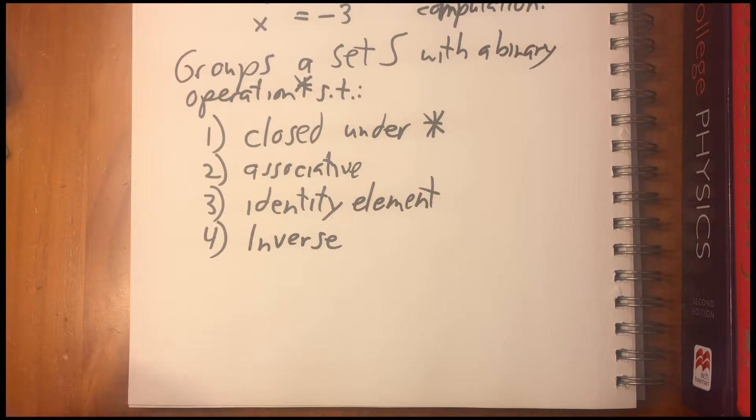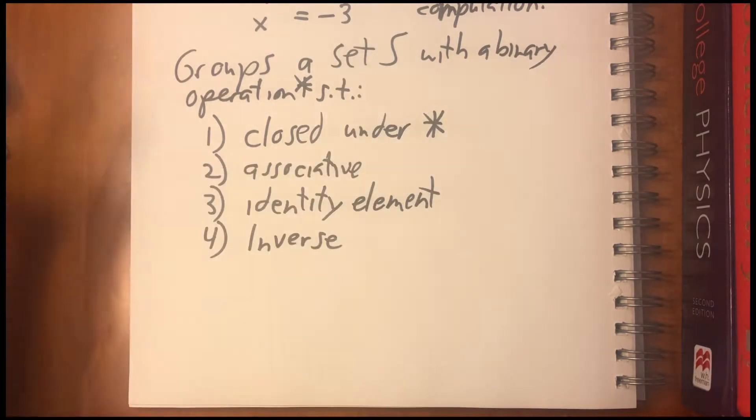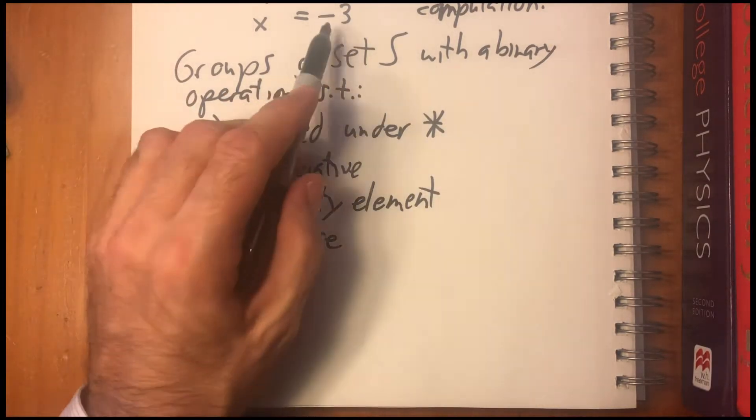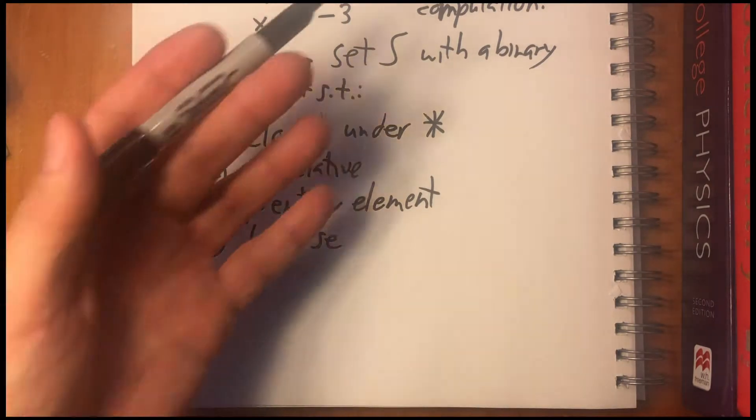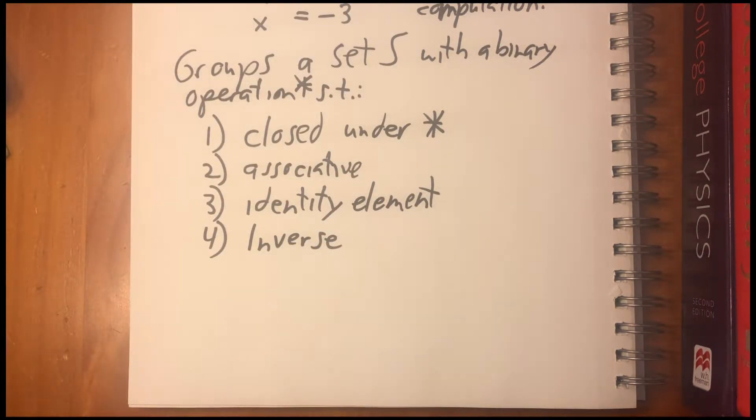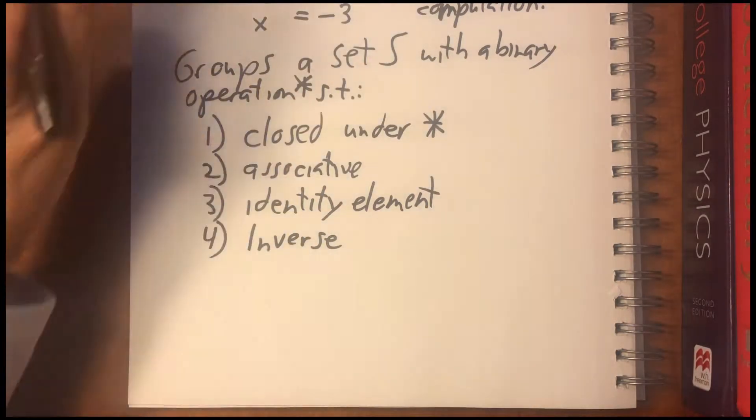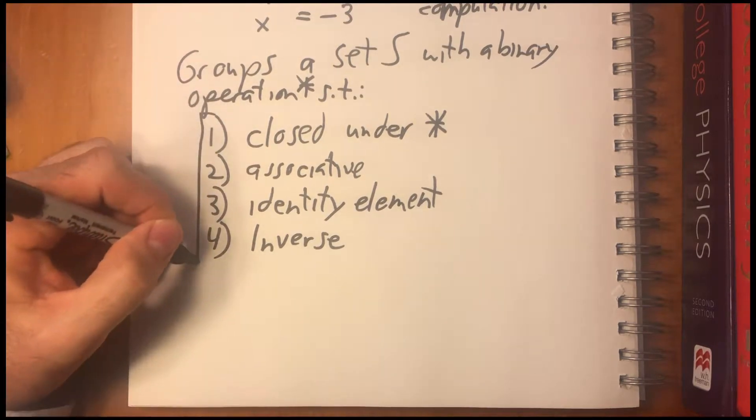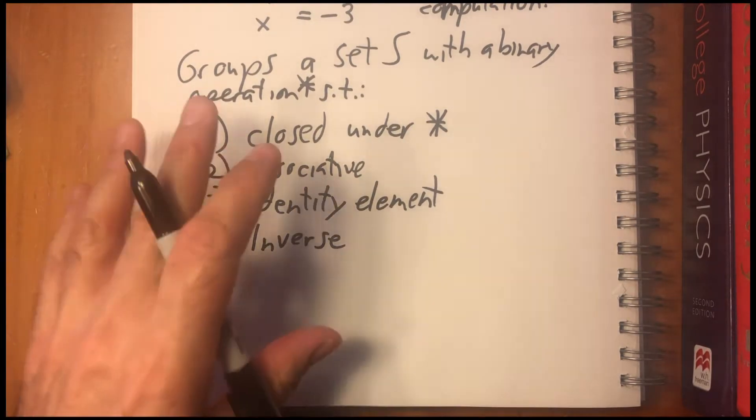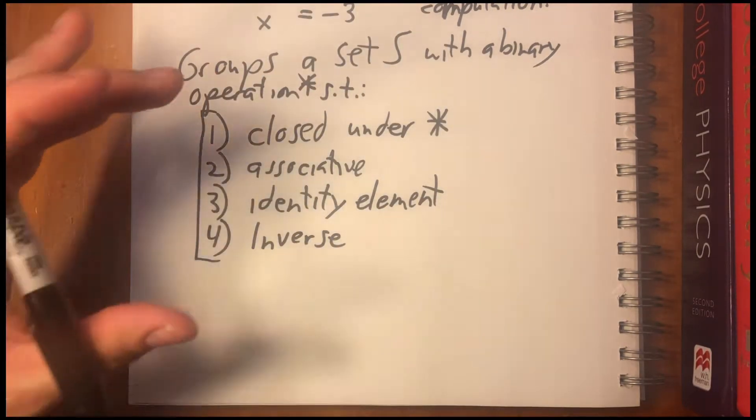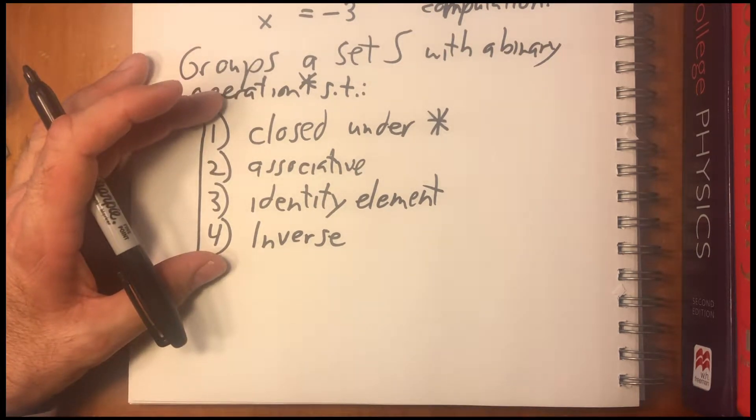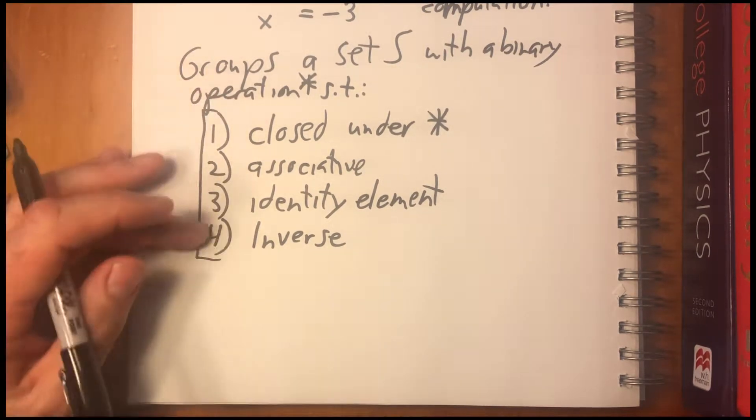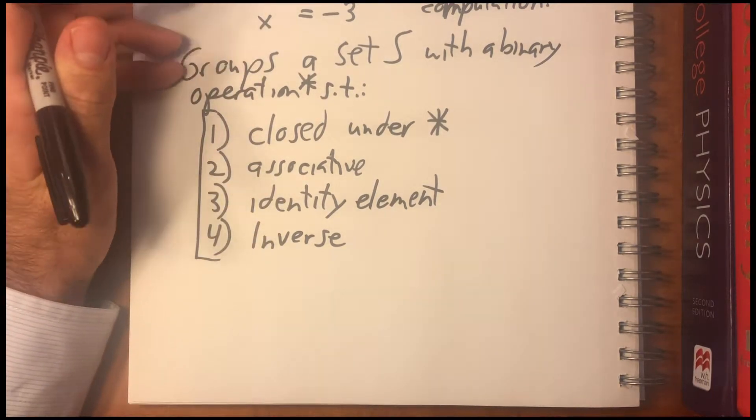So again, with integers, we all know what the inverses of every number is. The inverse of minus three is three. The inverse of five is minus five, and so on. What that means is it, if you add five to minus five, you get back the identity. Right? So these are the properties that make a group. A set with a binary operation that have these four axioms hold is a group.